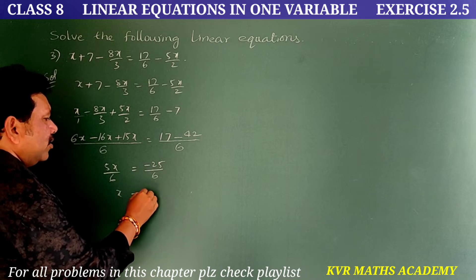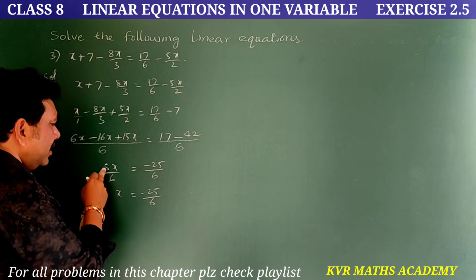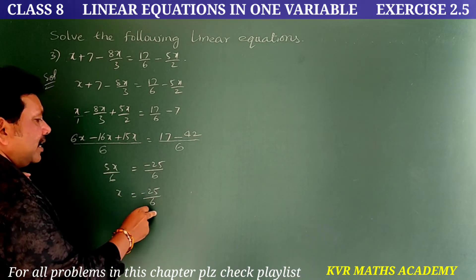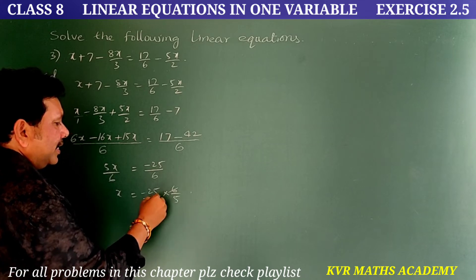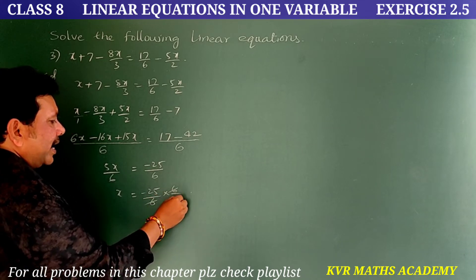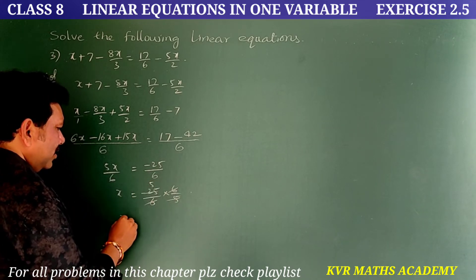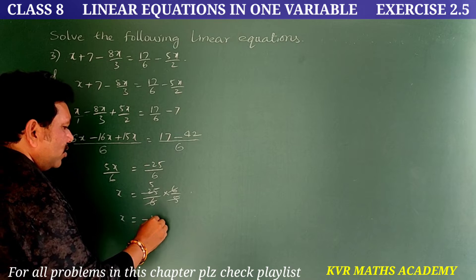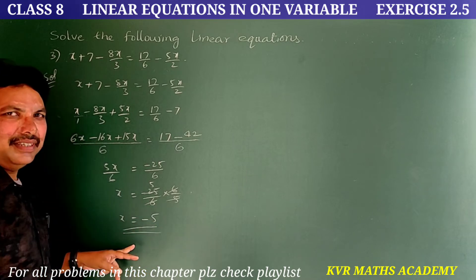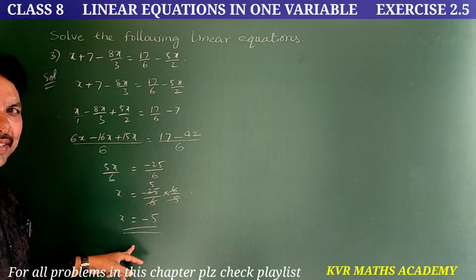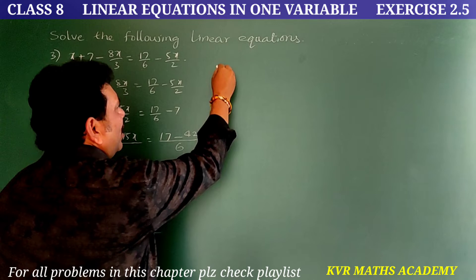Therefore x = -25/6 × 6/5. The 6s cancel and 5 cancels with 5, so x = -5.